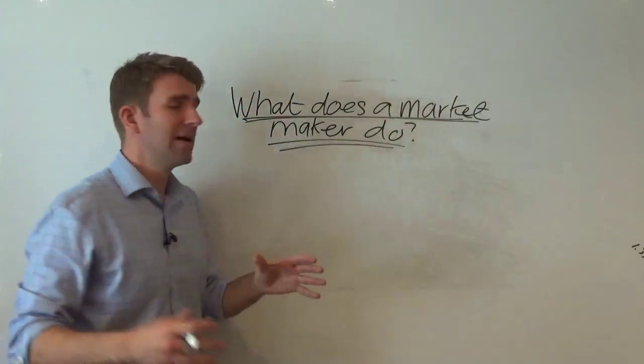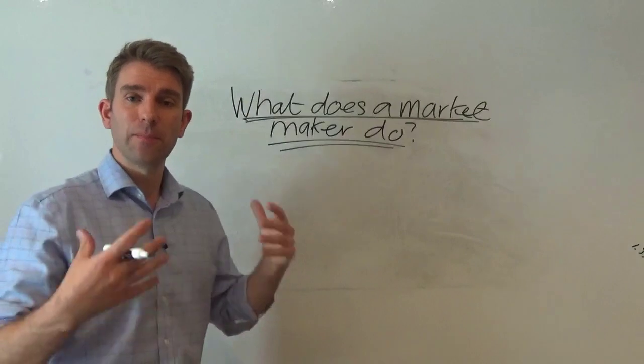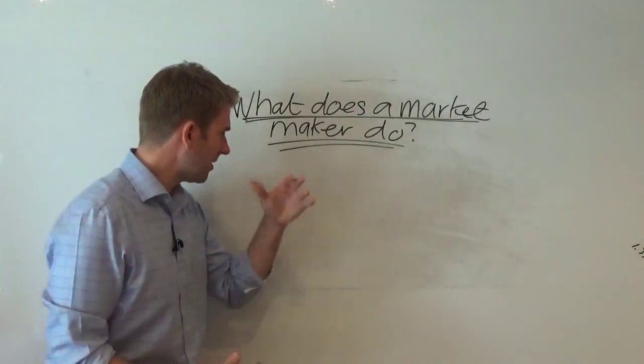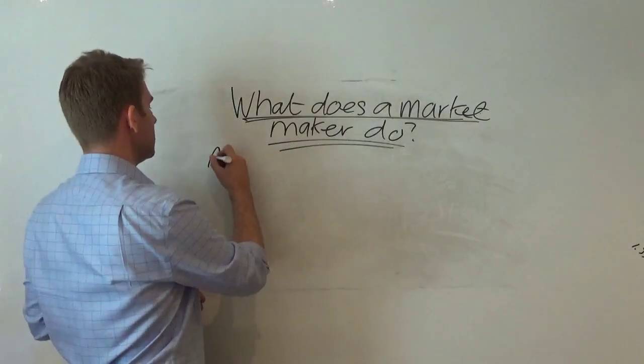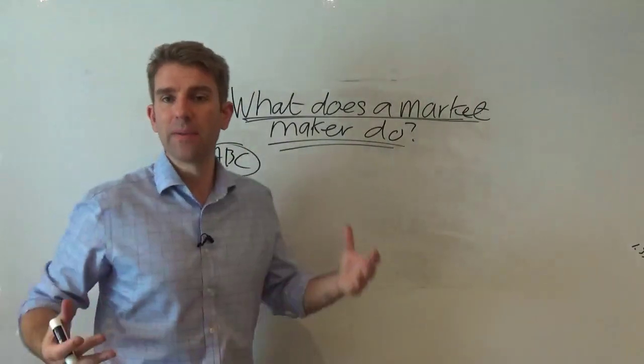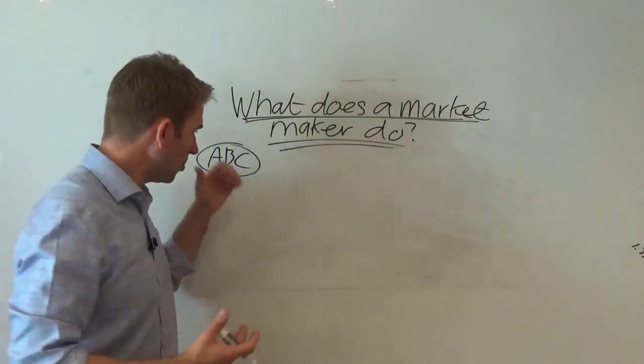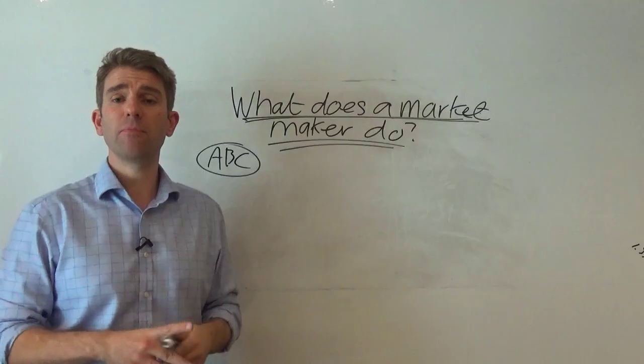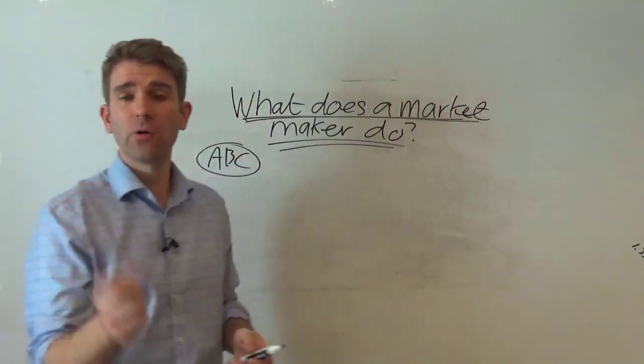So basically a market maker is there to provide liquidity for people at all times. So if you become a registered market maker in, let's say we're trading an ABC commodity or stock wherever it could be, you are basically saying you will always be able to buy or sell that stock. So if a member of the public can come in and always buy or sell that stock.